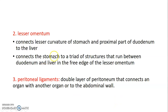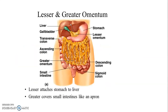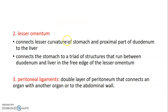The lesser omentum connects the lesser curvature of the stomach and proximal part of the duodenum to the liver. It connects the stomach to a triad of structures — three structures that run between the duodenum and liver in the free edge: the common bile duct, portal vein, and hepatic artery.